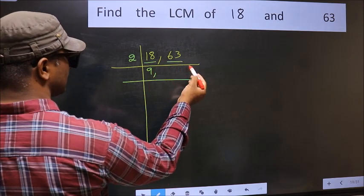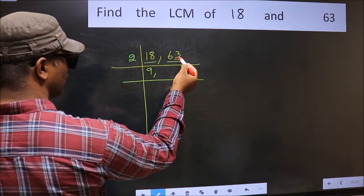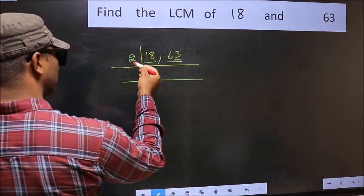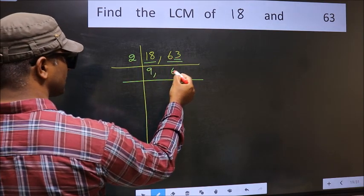The other number 63. Last digit 3, not even. So this is not divisible by 2, so you write it down as it is.